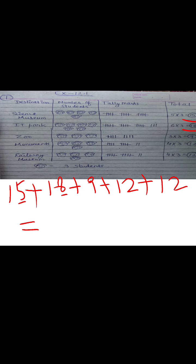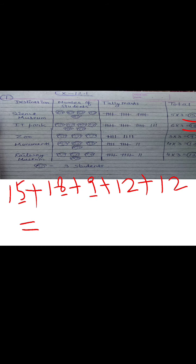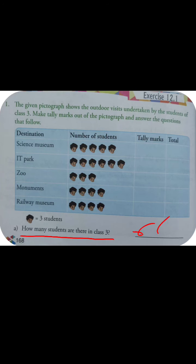We already know how to add. First we will add the ones digits: 5 plus 8 is 13, plus 9 is 22, plus 2 is 24, plus 2 is 26. We write 6 and carry 2 to the tens place. Then 2 plus 1 is 3, plus 1 is 4, plus 1 is 5, plus 1 is 6. So 66 students total.